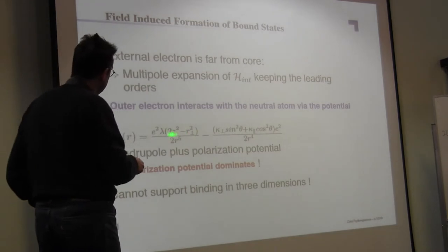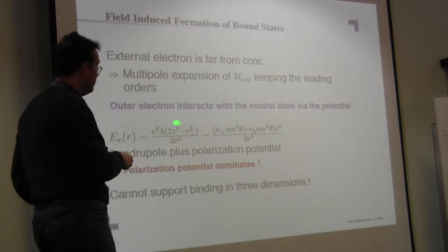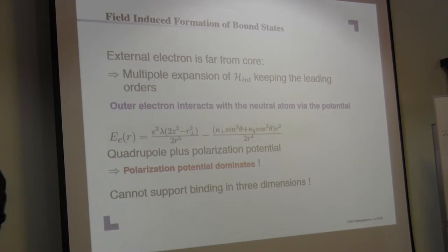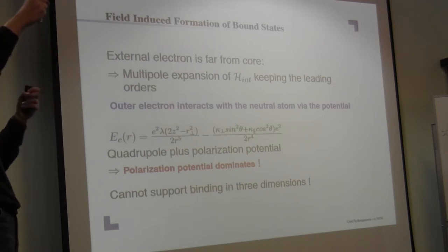It's one over r squared and three here. It turns out that this is extremely small for typical atoms. The dominant term, by far, is this term, which is polarization interaction. The charge induces a dipole, and these two interact. This is the polarization potential, which goes with one over r to the fourth.